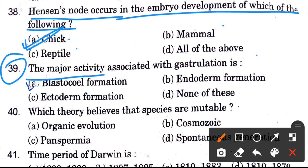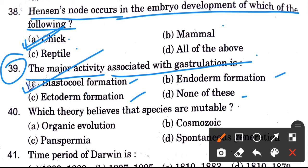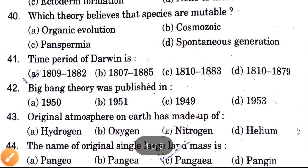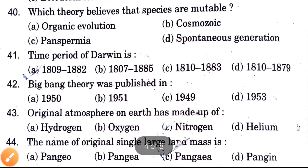The major activity associated with gastrulation is — options are blastocoele formation, endoderm formation, ectoderm formation, none of the above. The answer is blastocoele formation.